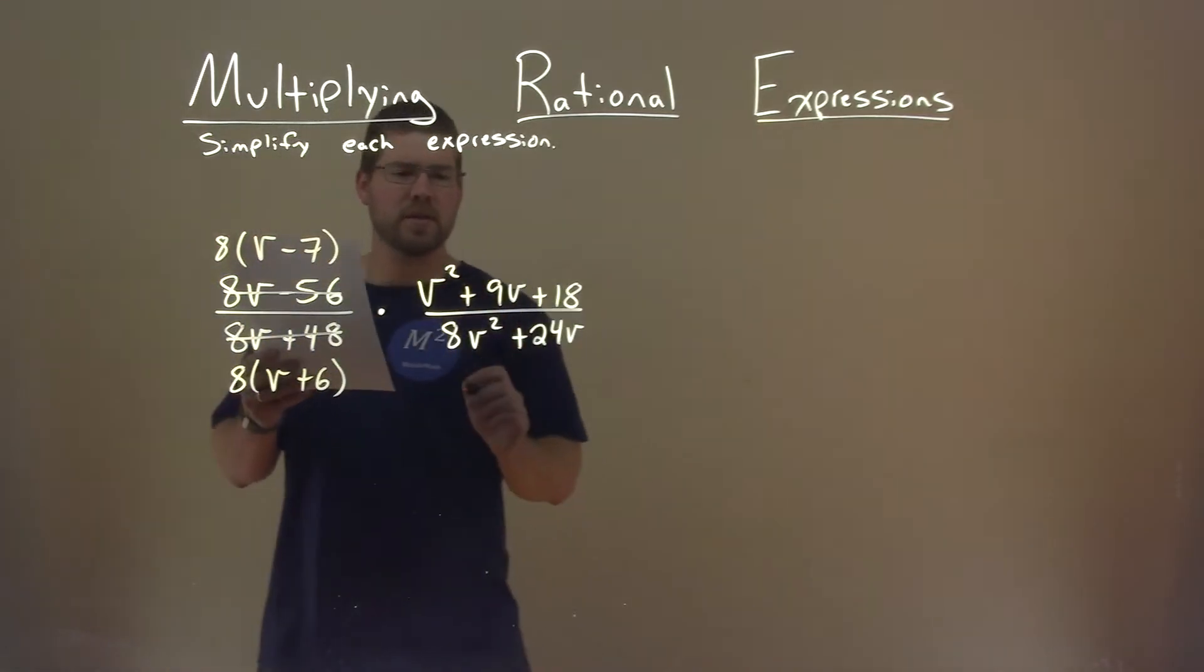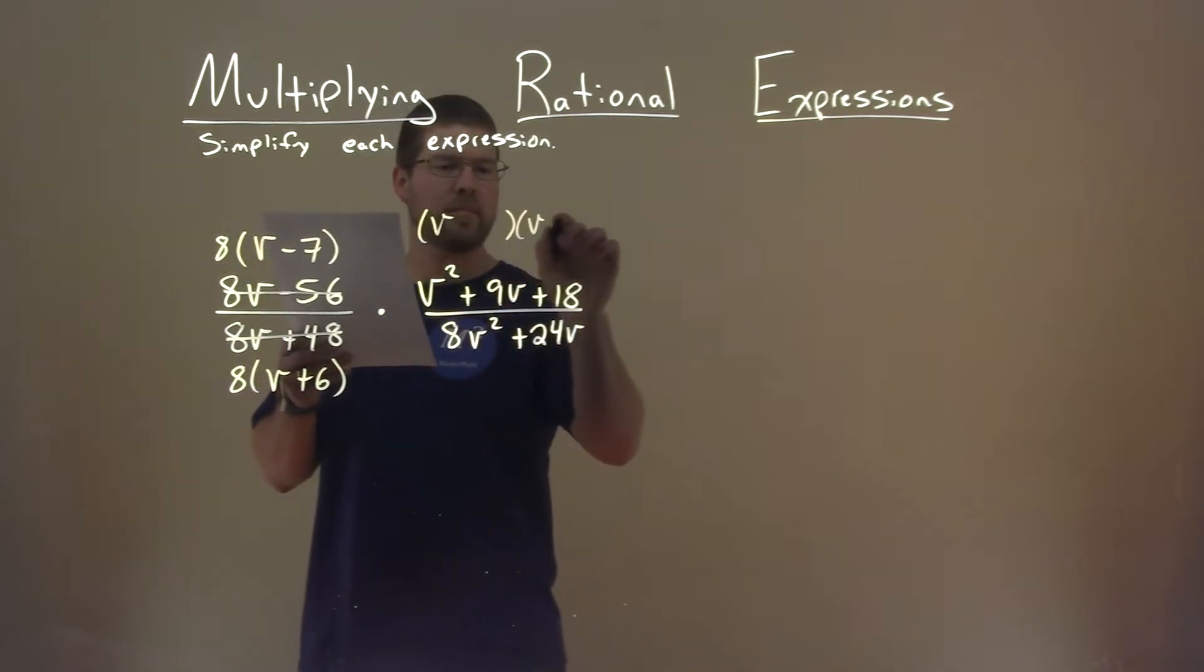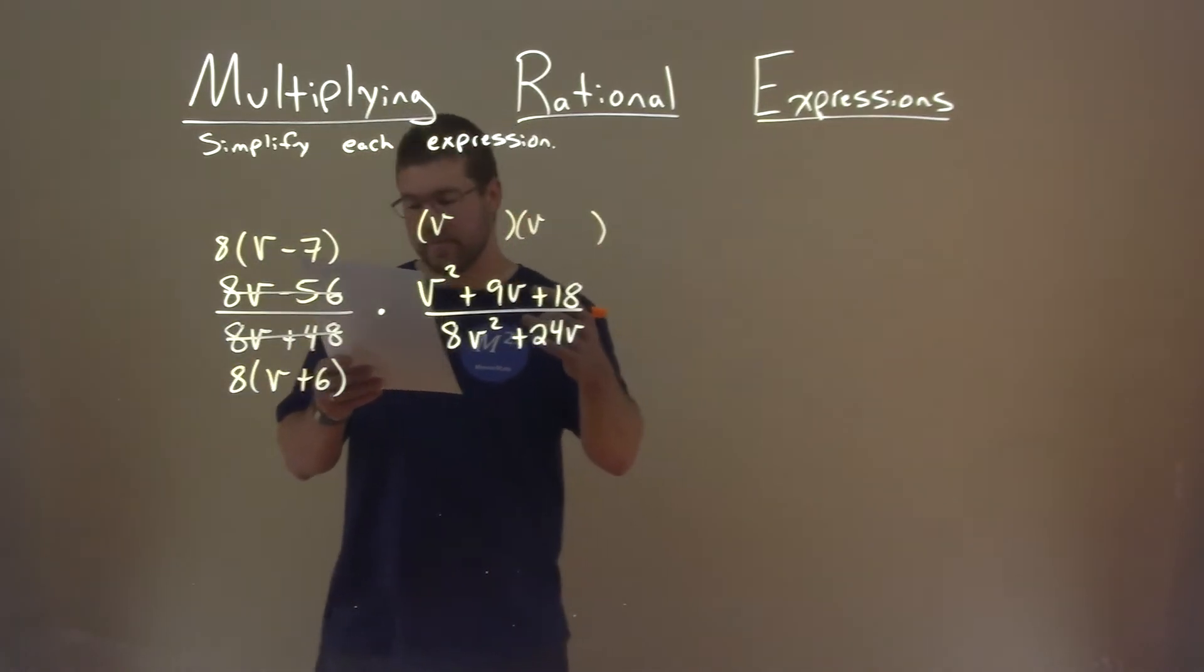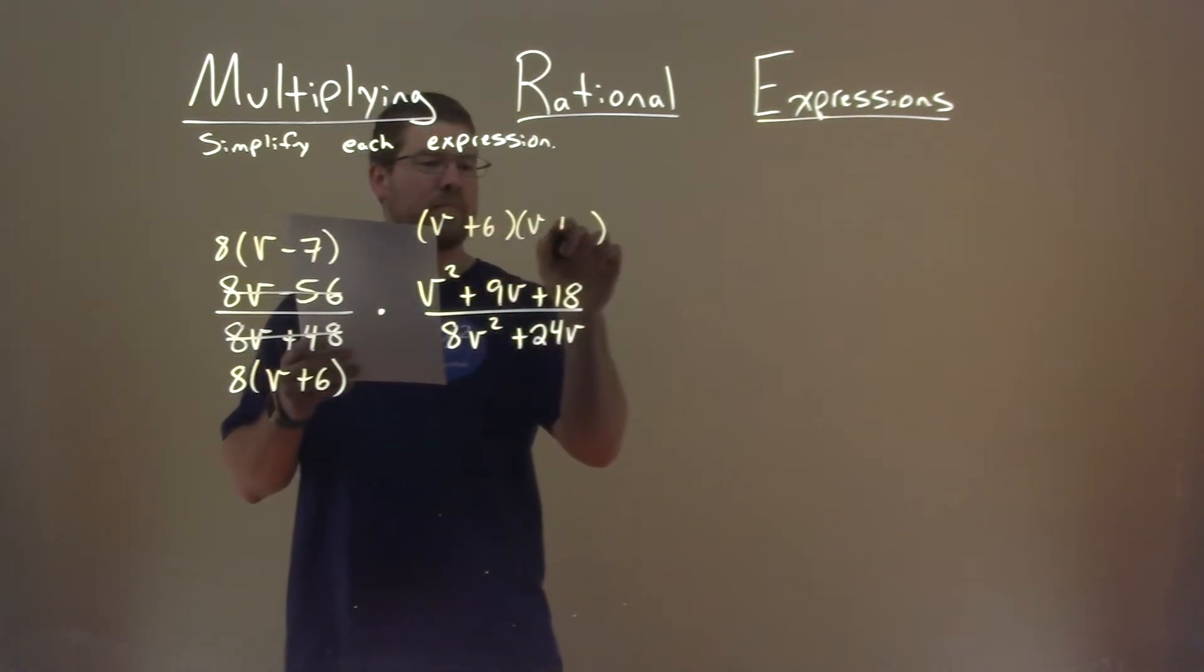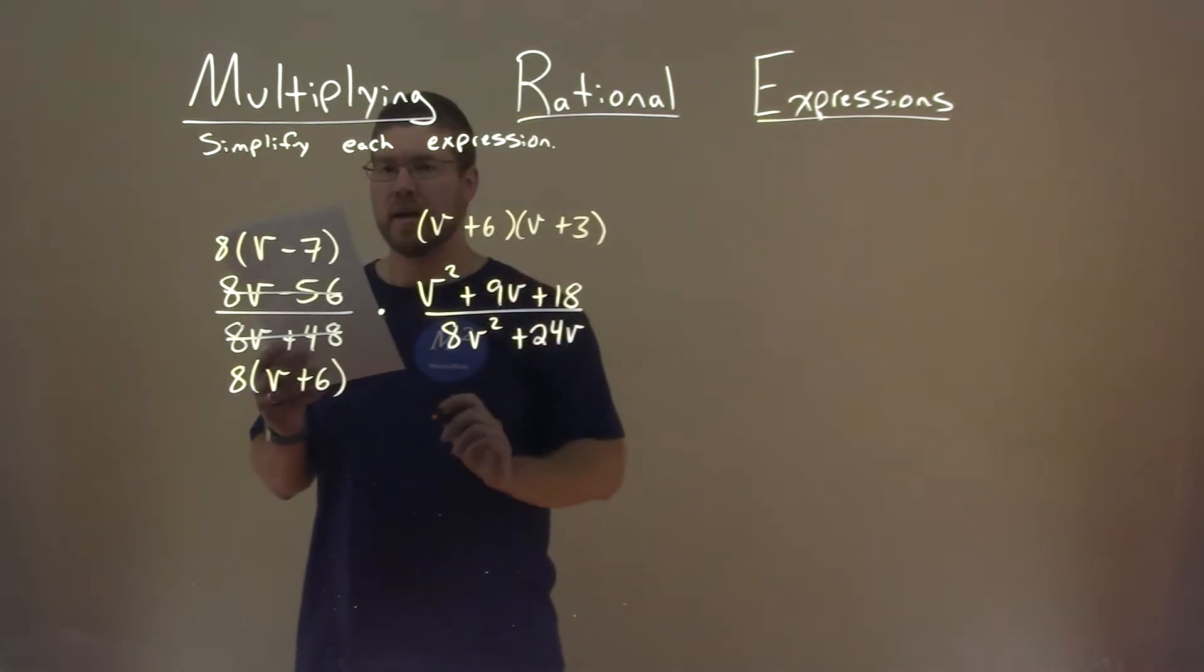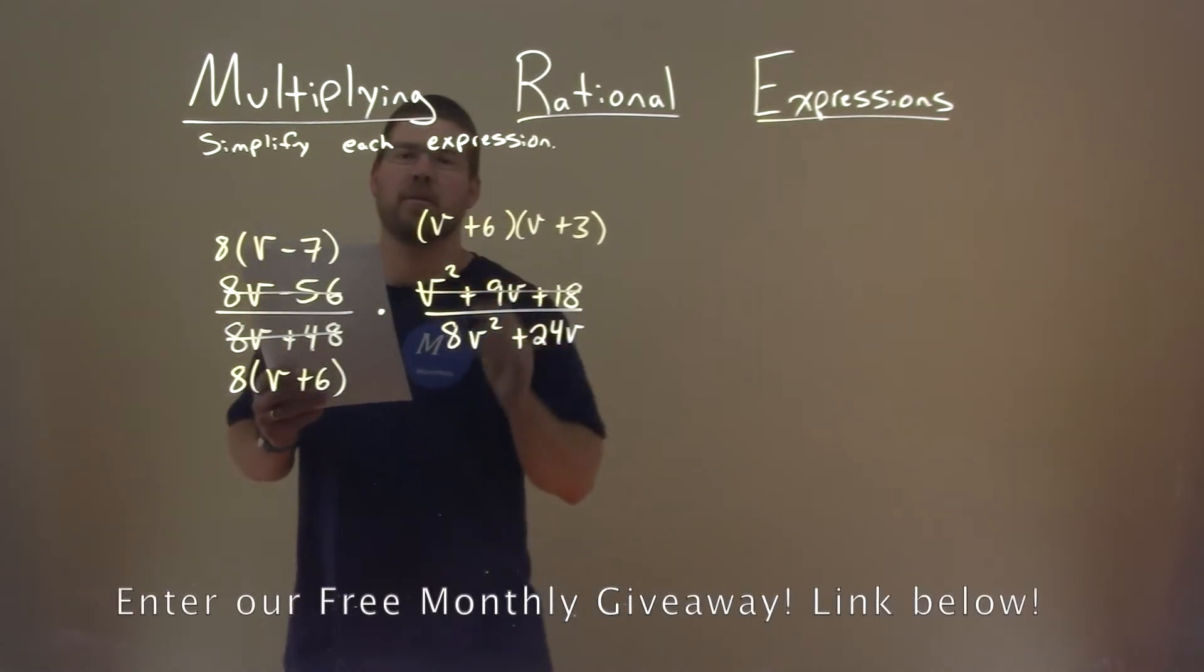Now, v squared plus 9v plus 18 looks like you can factor. What two numbers multiply to be 18, but add to be 9, and that's 6 and 3. 6 times 3 is 18. Add the 2, we get 9. So let's replace that with our factored form.